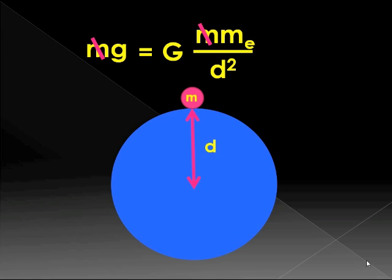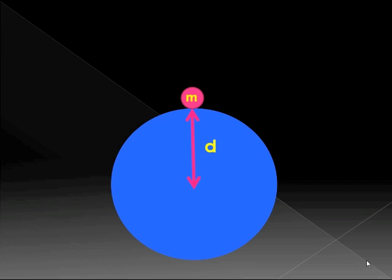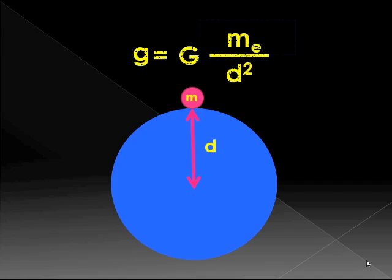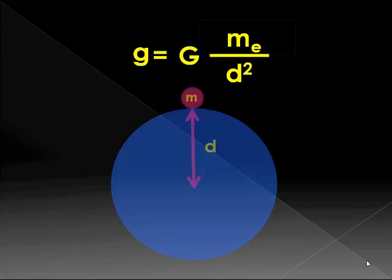We can cancel out the m's and we're left with a very simple equation. g is big G times m e over d squared. All of these are constants we can solve for the mass of the earth.